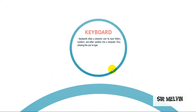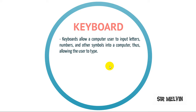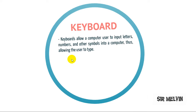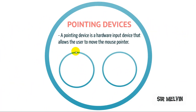So what are the types of input devices? The first example is the keyboard. A keyboard allows a computer user to input letters, numbers, and other symbols into a computer, allowing the user to type.